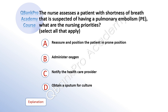The nurse assesses a patient with shortness of breath that is suspected of having pulmonary embolism. What are the nursing priorities? Select all that apply. A, reassure and position the patient in prone position. B, administer oxygen. C, notify the healthcare provider. D, obtain a sputum for culture.